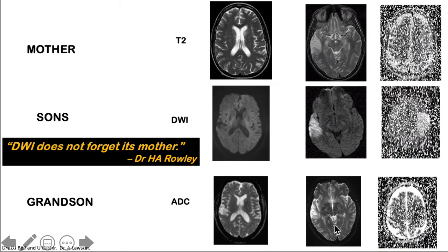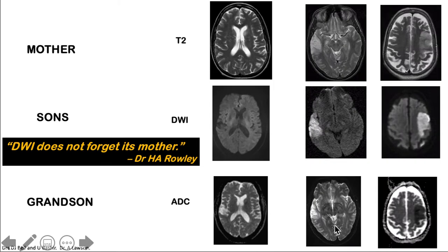For comparison, if there is a hyperintense signal in both DWI and a corresponding drop in the ADC, this is what we call true restricted diffusion.